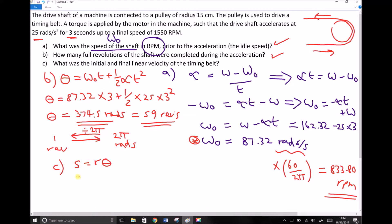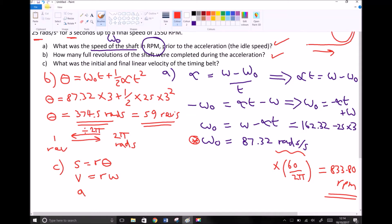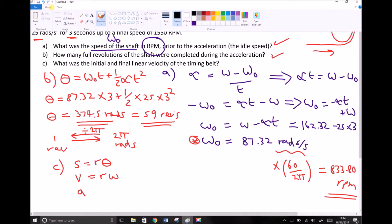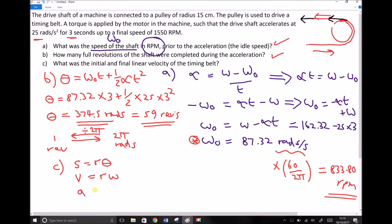Now the same is true for velocity. If we want the linear velocity, all we need to do is multiply angular velocity by the radius. And finally, the same is true for acceleration. If we want linear acceleration, which would be the linear acceleration of a point on the surface, or the linear acceleration of the surface, in this case the belt, that would equal r alpha.